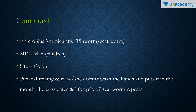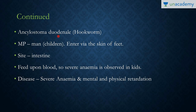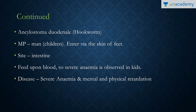Next is Ancylostoma duodenale, also known as the hookworm. It also has a single host — man — and is more common in children. Unlike other worms, it does not need to enter via the oral route; it enters via the skin of the feet using specific structures. Its site is the intestine, and it causes severe anemia as it sucks blood from the intestinal lining, which can also lead to mental and physical retardation.